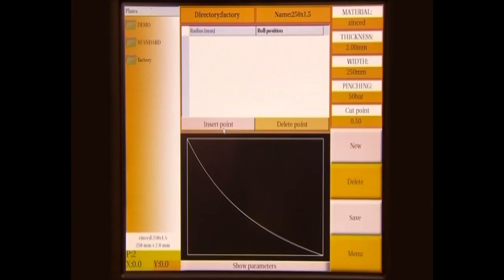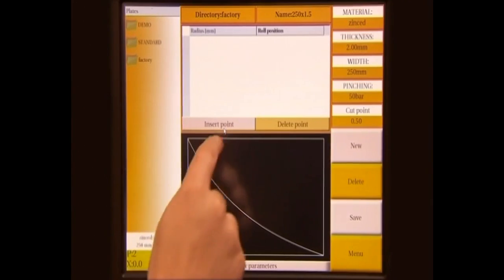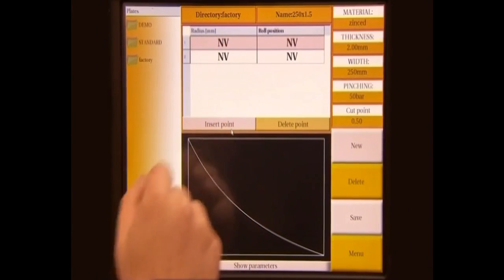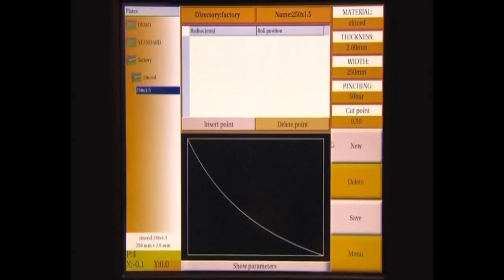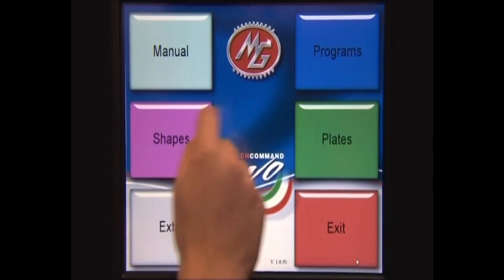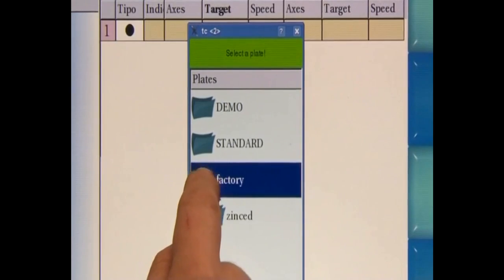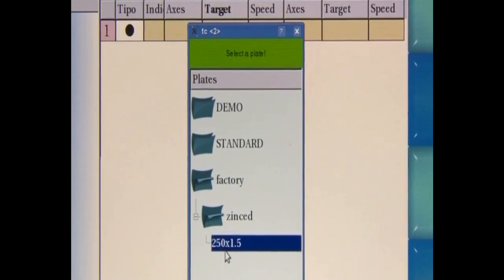Let's proceed now to the estimate of the plate elasticity, which takes place entering at least two test points, that is to say two positions of the bending roll and the corresponding obtained radiuses. The test itself is made manually, but the preparation steps can be automatically generated in the programs window.